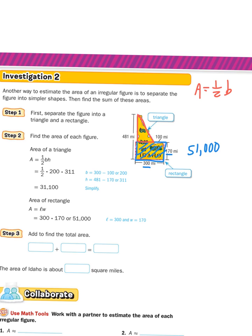For the top triangle, remember the formula is half times base times height. The whole bottom is 300, but we subtract the 100-mile offset, leaving a base of 200 miles. For the height: the full side is 481 miles, and we subtract the 170-mile rectangle height. 481 minus 170 equals 321. So the triangle's height is about 321 miles.